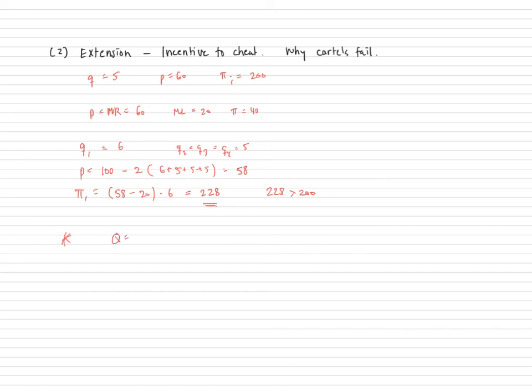And therefore, the total output will be six plus six plus six plus six or four times six is 24. And therefore, the price in the market will fall from 60 to 52.